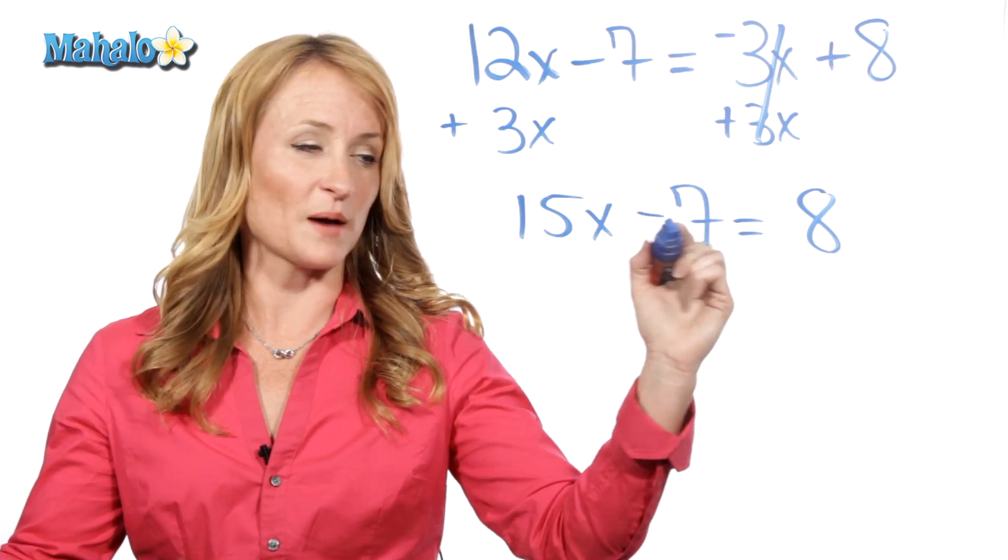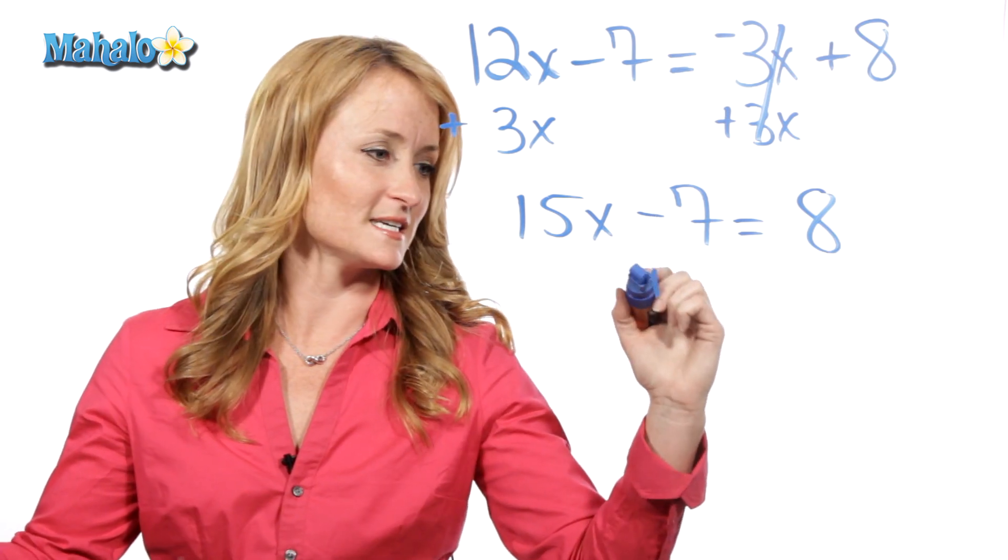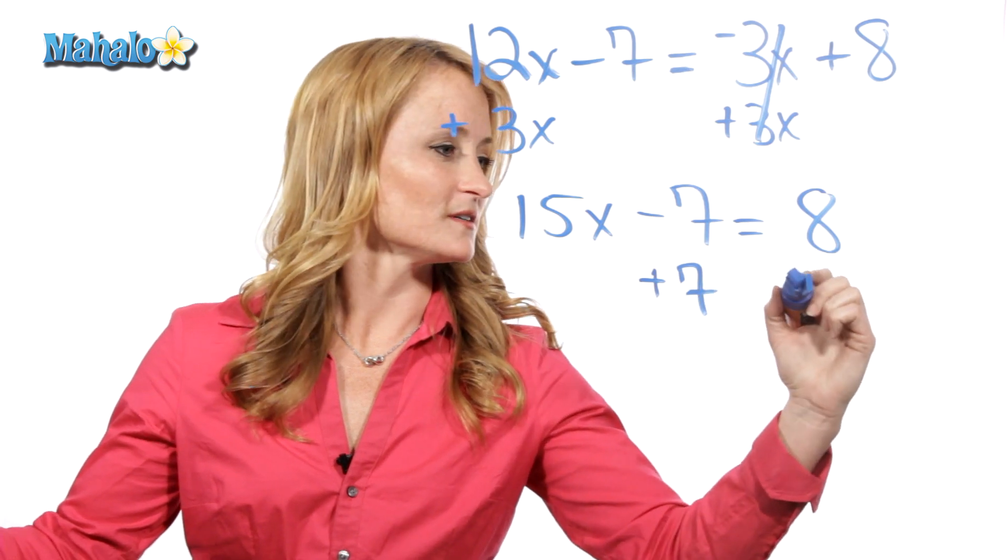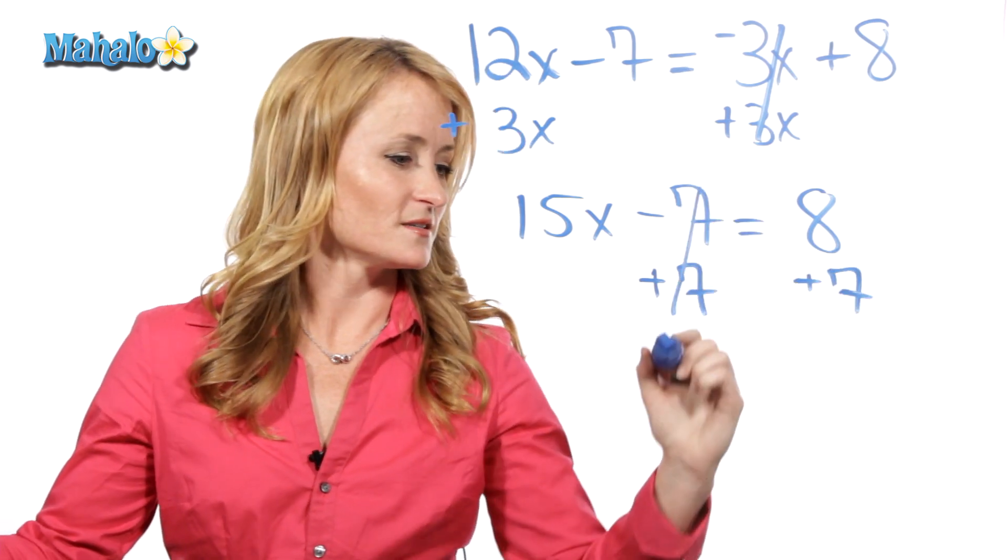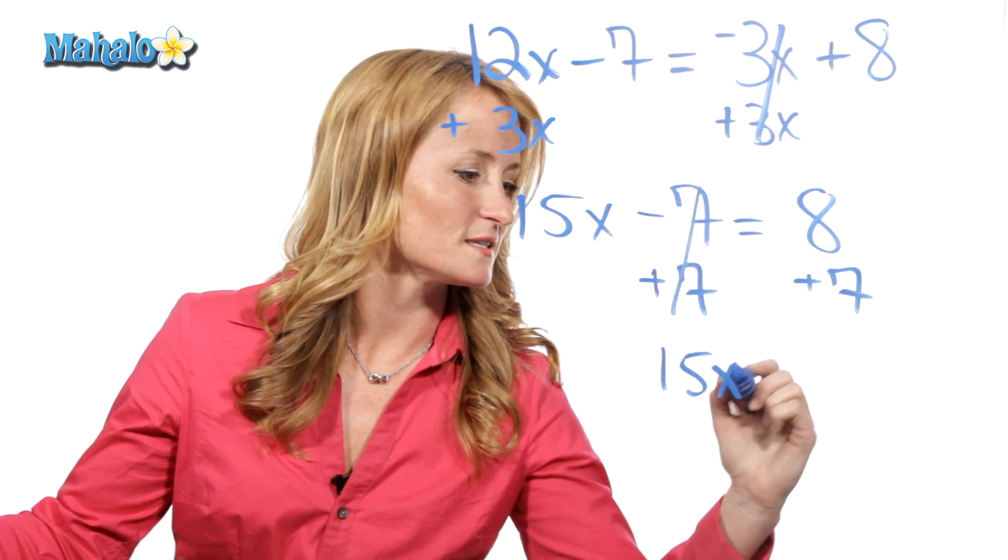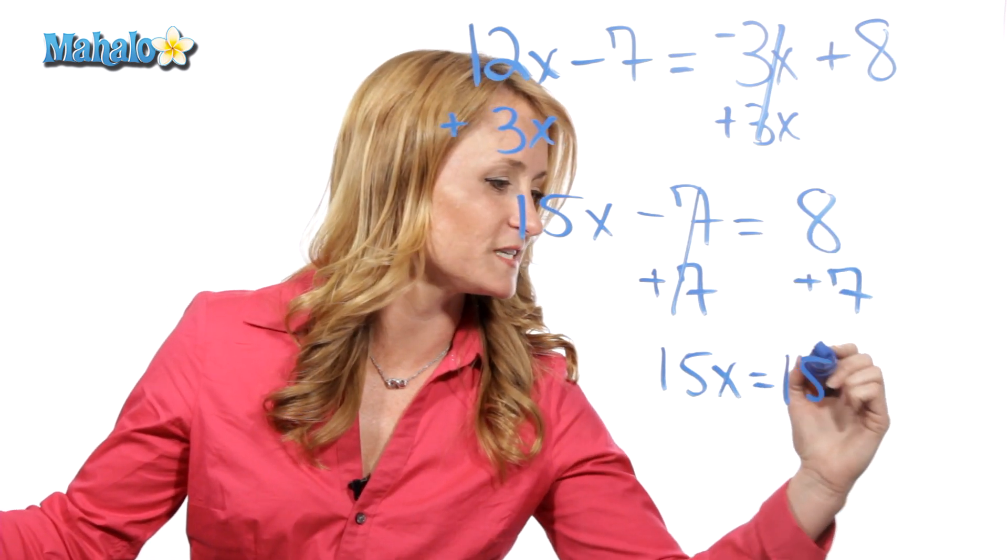Let's get rid of this 7, and the opposite of subtract 7 is add 7 to both sides. So, we're left with 15x equals 8 plus 7 is 15.